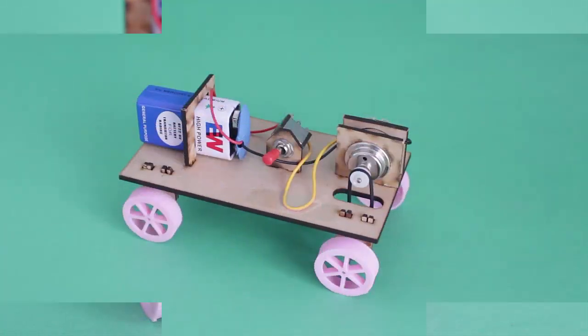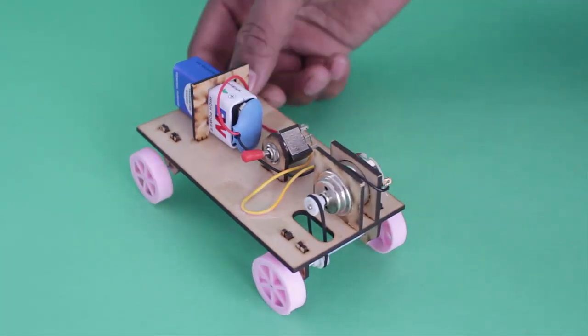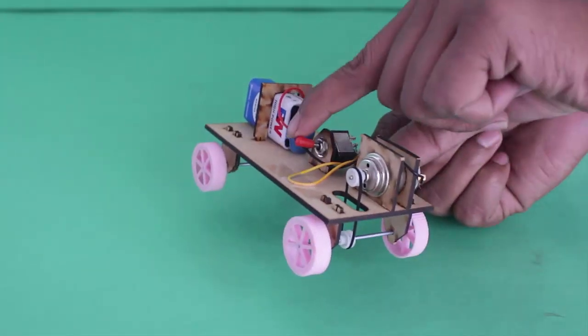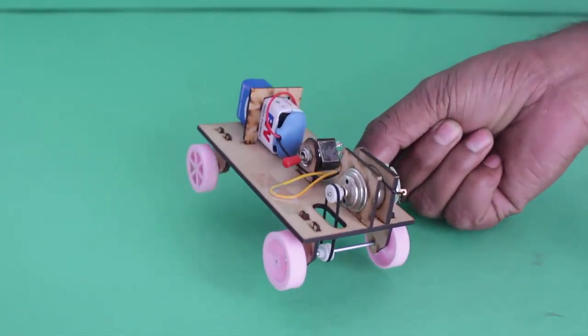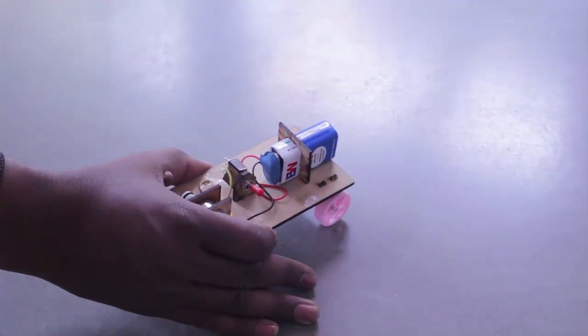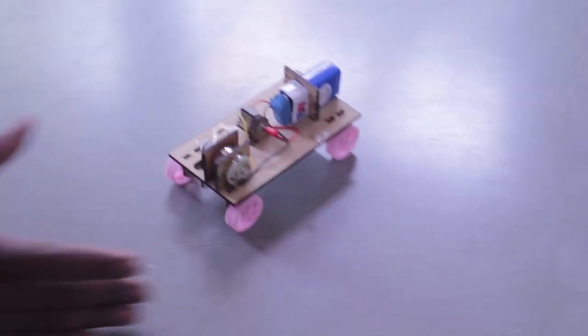Now on operating the switch, the motor will spin and the drive will be transmitted from the motor to the axle via the pulley and rubber band. On keeping the car on the floor, it will move forwards.